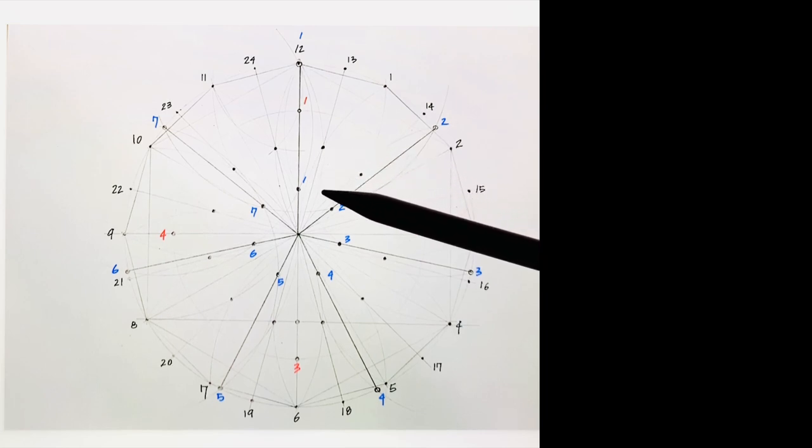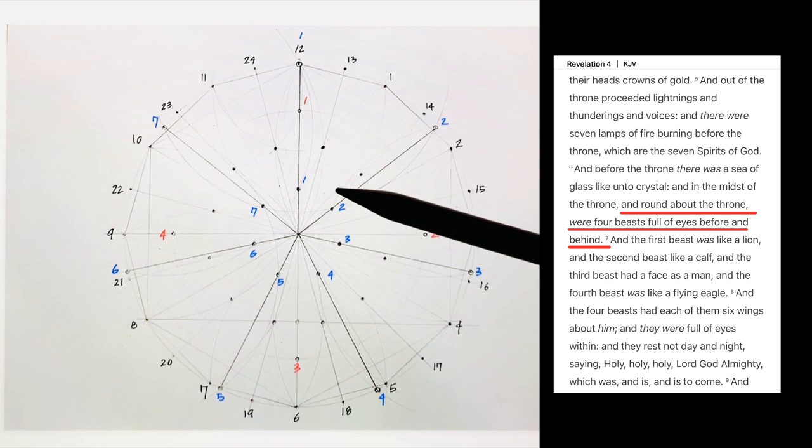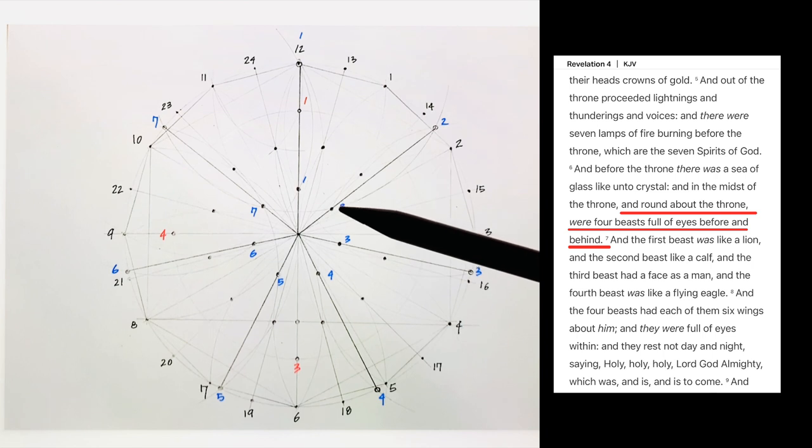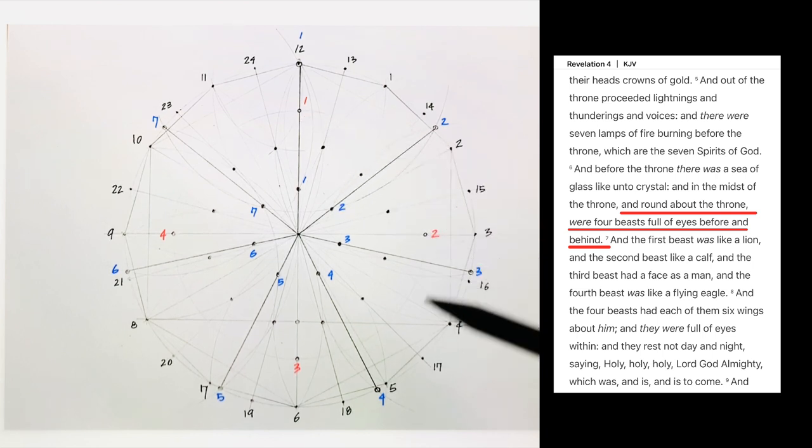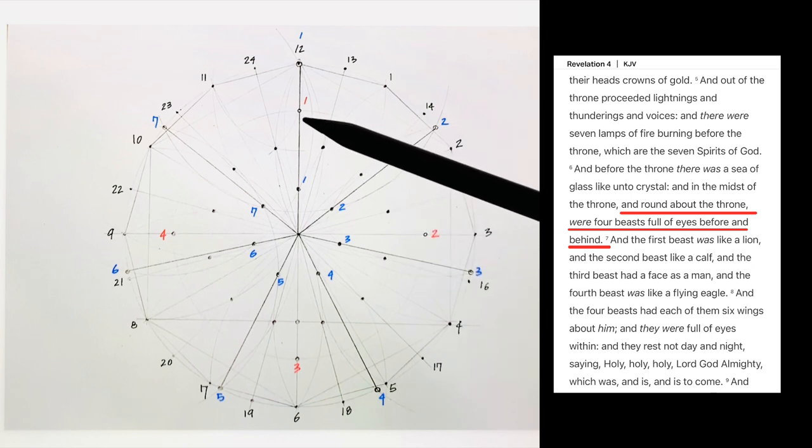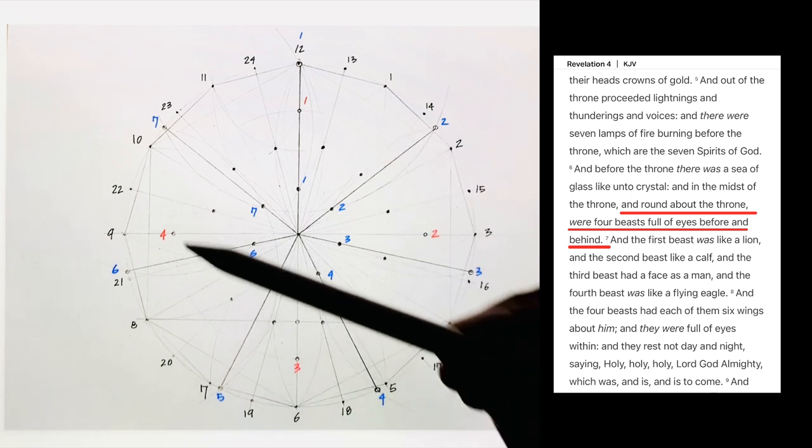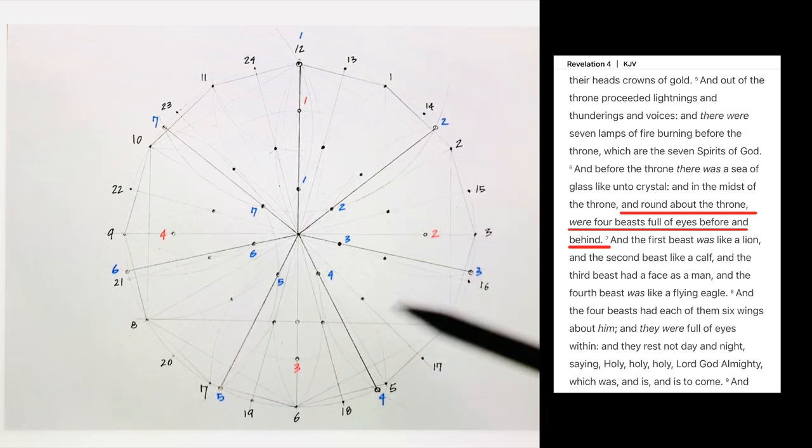Now we go to Revelation 4:6. And it says, And before the throne, there was a sea of glass, like unto crystal, in the midst of the throne. And round about the throne were four beasts, full of eyes before and behind. So it's round about the throne, and they're going to be in these four positions. Beast 1, 2, 3, and 4.